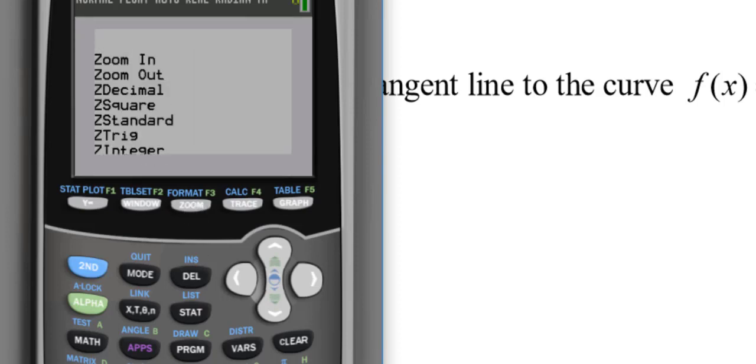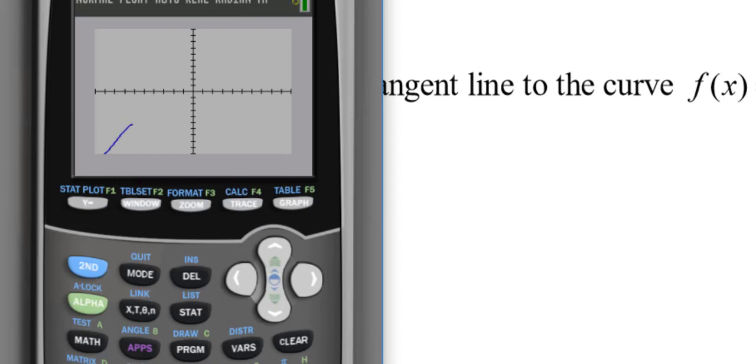I'll graph this in a standard window. If I'm only looking at the point (0, 1), perhaps you could zoom in on that area. I can see (0, 1) being approximately right here. Looking for the equation of the tangent line at that point, I expect my tangent line to have a positive slope, and I can graph that when I'm done and check it.